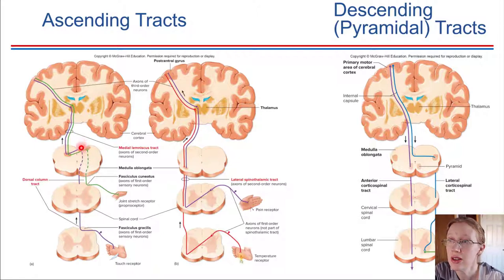Eventually, the signal is going to cross over to the other side. In this case, it's labeled as happening in the medulla. That crossing over would either happen in the medulla or at some other location in the spinal cord.